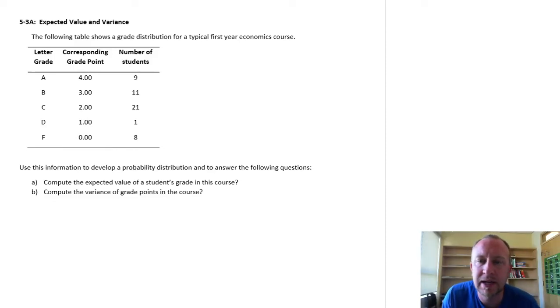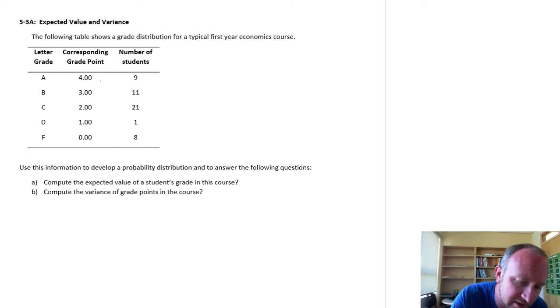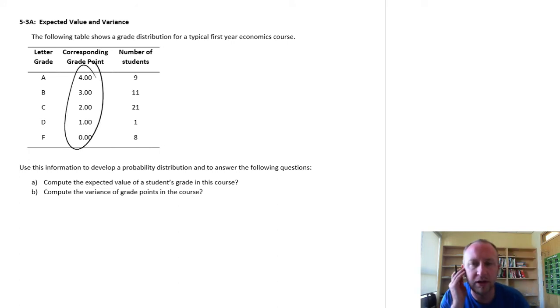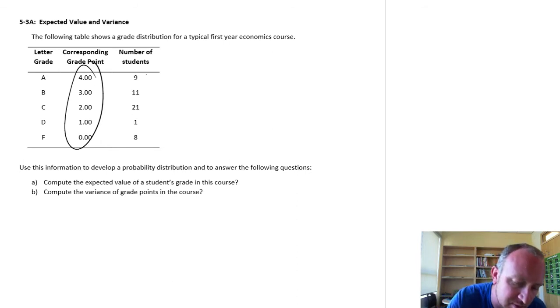Hello and welcome back. In this exercise now we're going to use similar data to what we've used in exercise 5-2a, but now we're going to also calculate expected values of a student's grade in this course and also we'll look at variance. So again we've got a grade distribution for a typical first year economics course. I have letter grades with numerical coding so an A is equal to 4, B is equal to 3, etc., and the number of students receiving each of those particular grades.